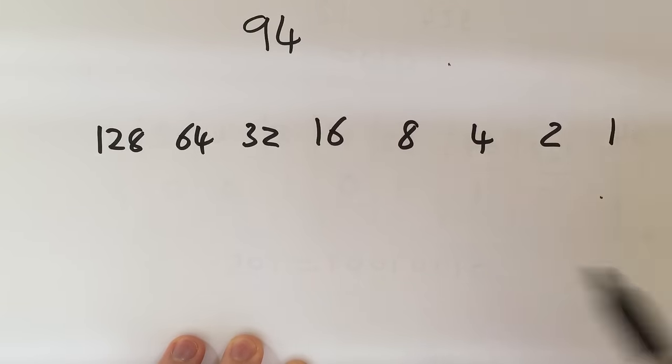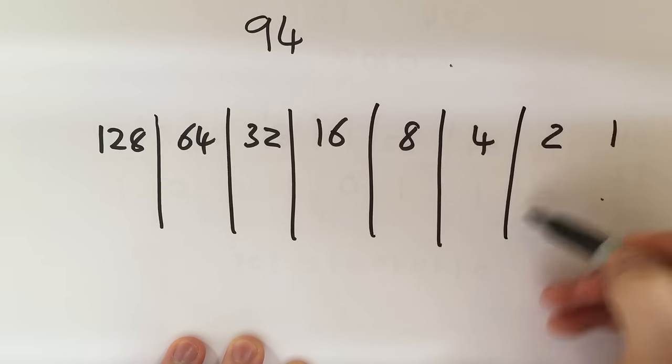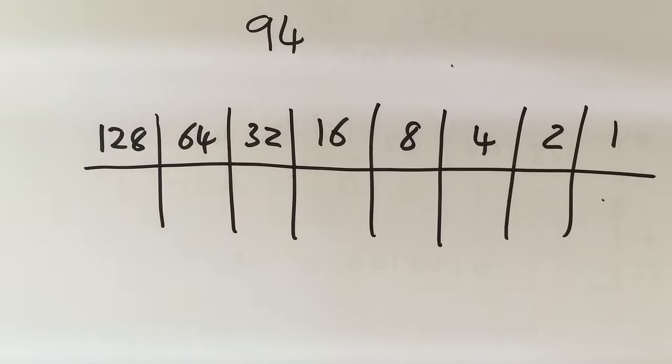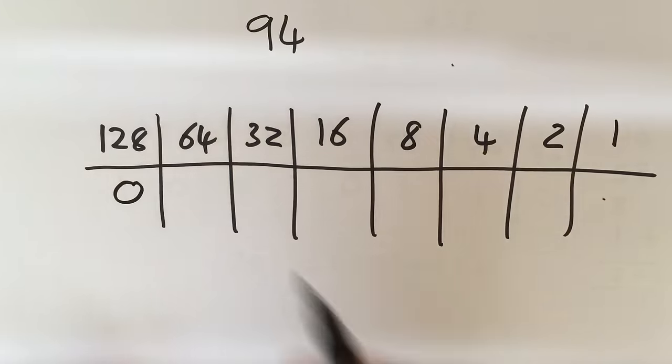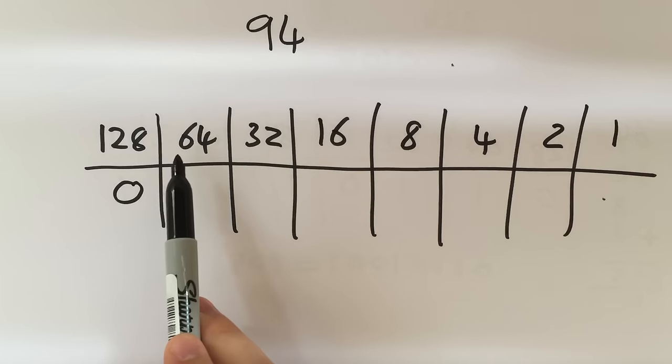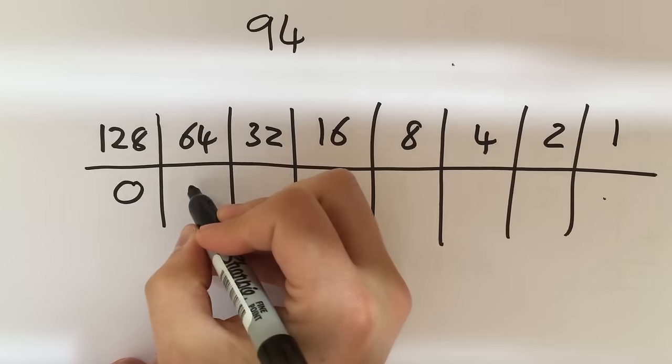So if I want to represent 94, I need to be thinking about which of these numbers am I going to need to make up 94. Now if I used 128, I would already be over the top of 94. So I know that I'm definitely not going to need 128 so I can draw a zero in it. Now because I know that 64 is less than 94, I know that 64 can go into the 94. So I'm going to say yes, I'm going to use this 64.